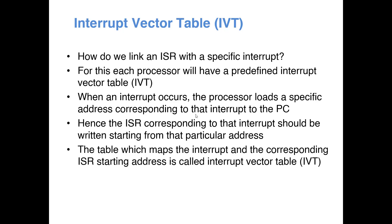How do we link a particular ISR with a particular interrupt? As mentioned, each interrupt signal has a corresponding interrupt service routine. This linking is done through something called an interrupt vector table (IVT). In the IVT, what is predefined is the starting address of the ISR for the corresponding interrupt. ISRs are functions stored at predefined memory locations — if a particular interrupt comes, the processor looks up the IVT, finds the starting address of the corresponding ISR, and jumps to it.